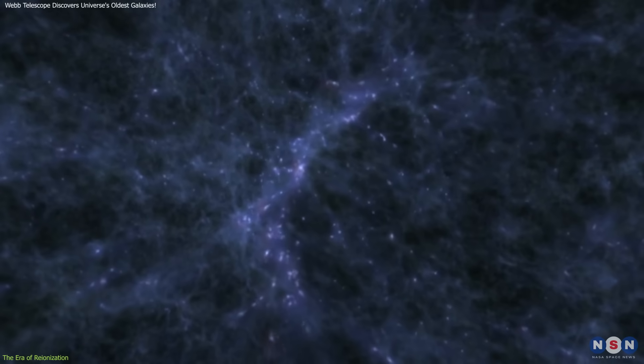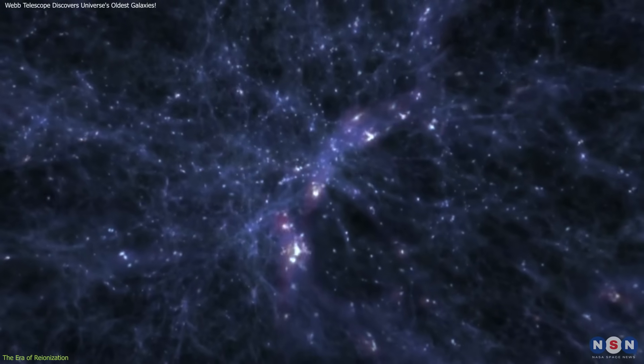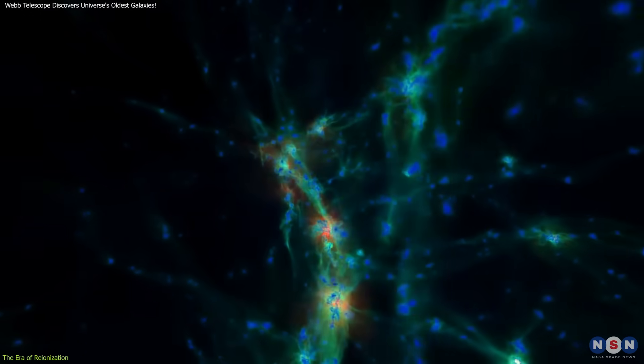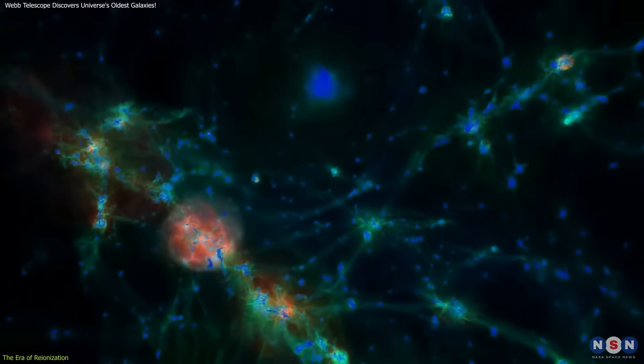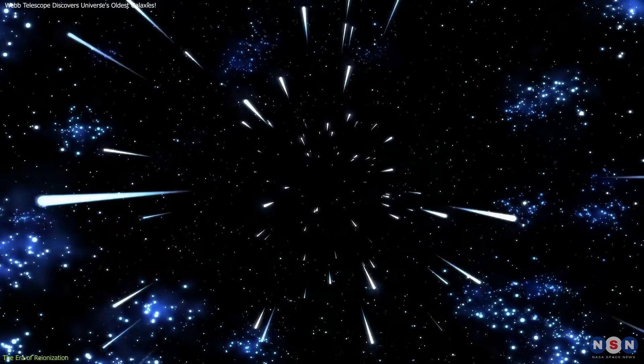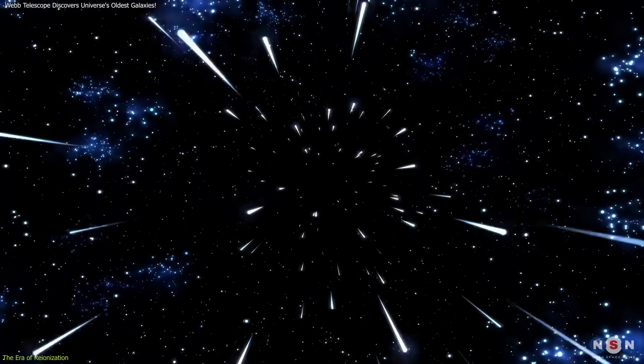During the era of reionization, the first stars and galaxies ionized the surrounding hydrogen gas, creating pockets of transparency in an otherwise opaque universe. This process allowed light to travel freely through space.